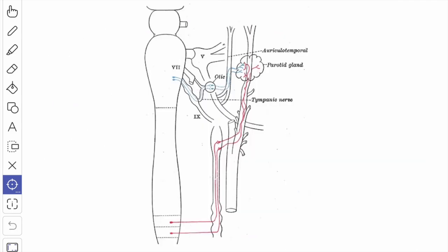The auriculotemporal nerve receives the postganglionic parasympathetic fibers from the otic ganglion, and these fibers supply the parotid gland.